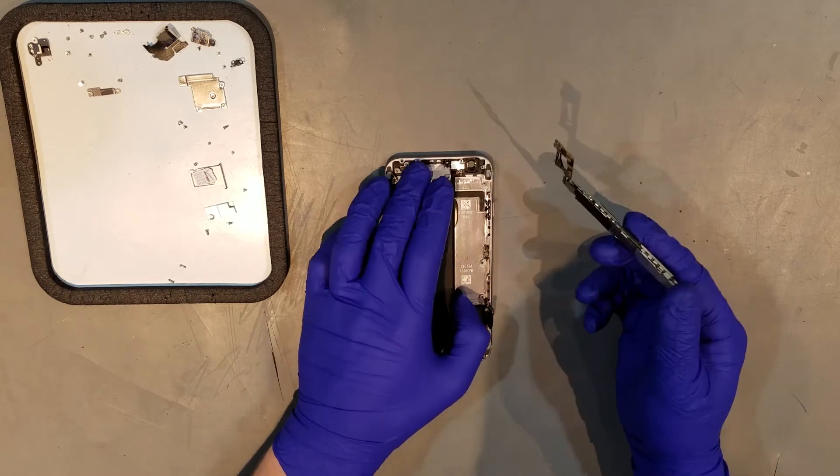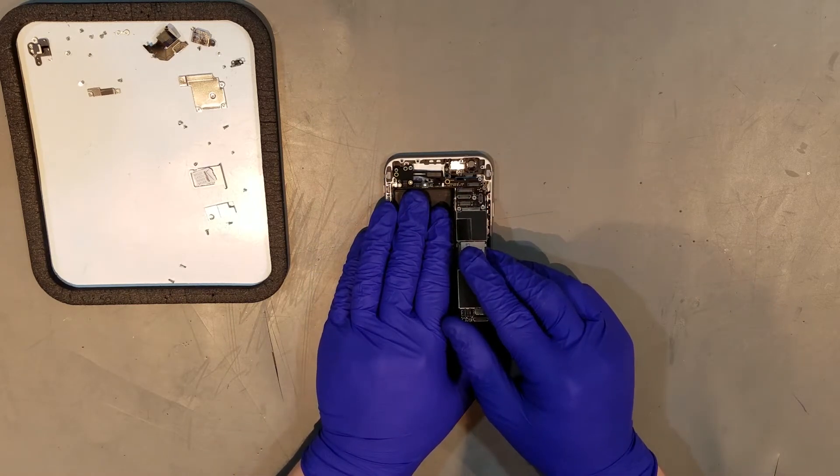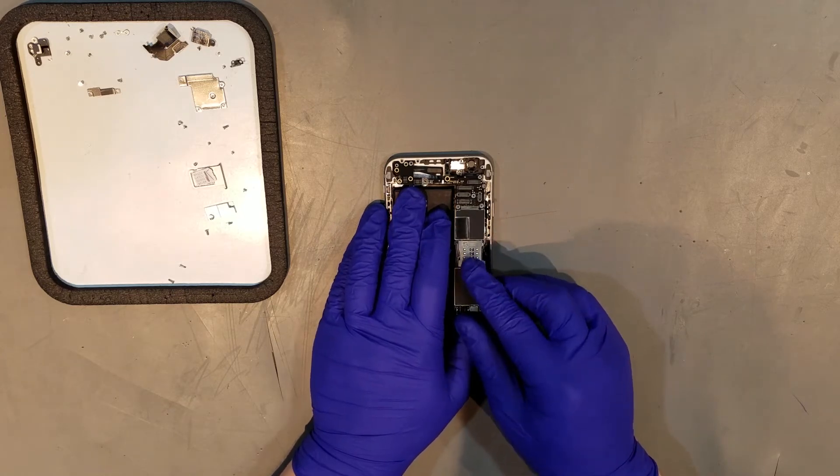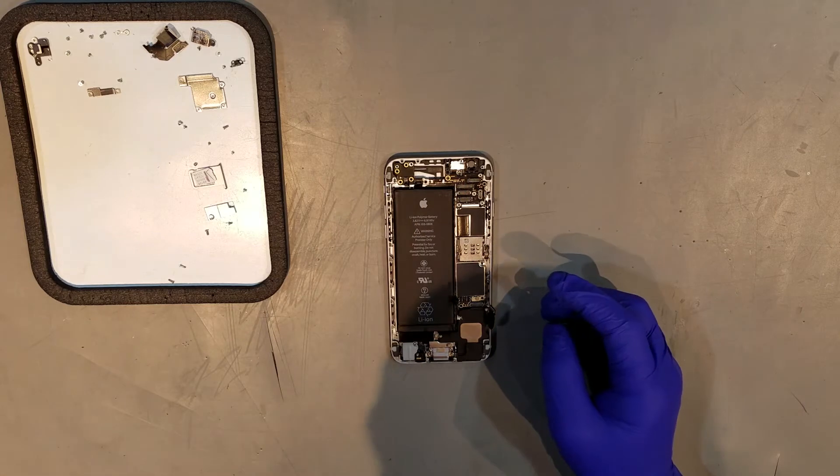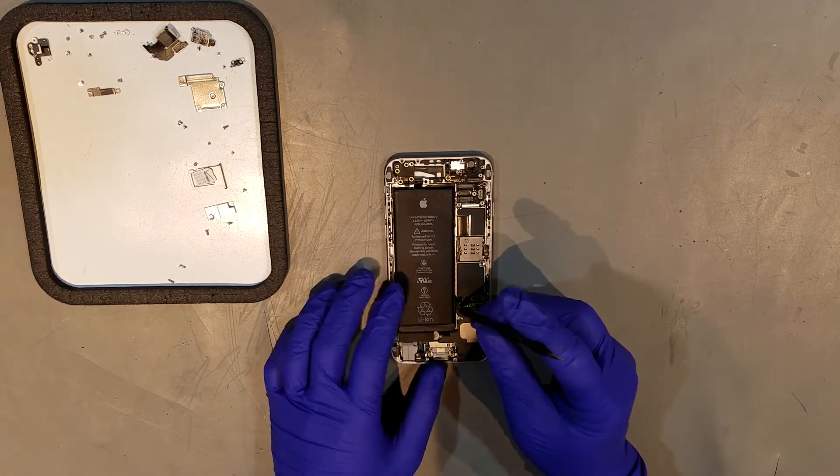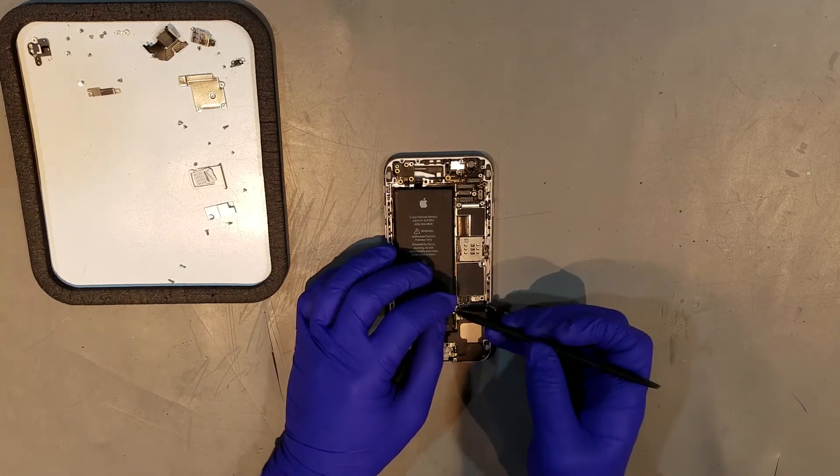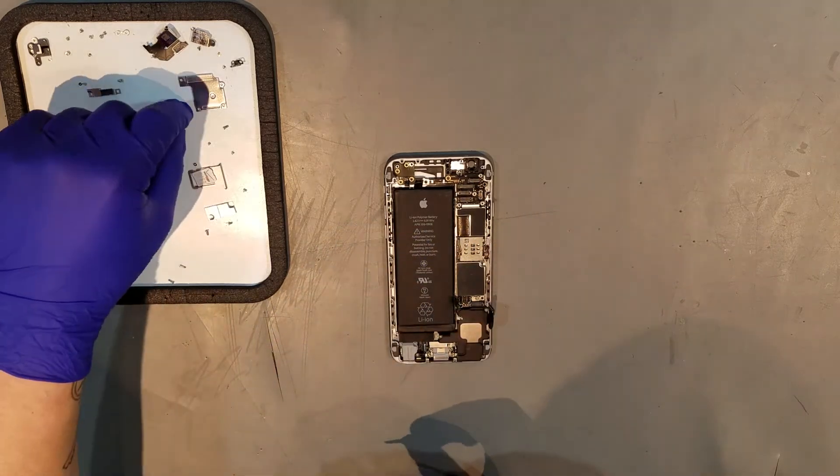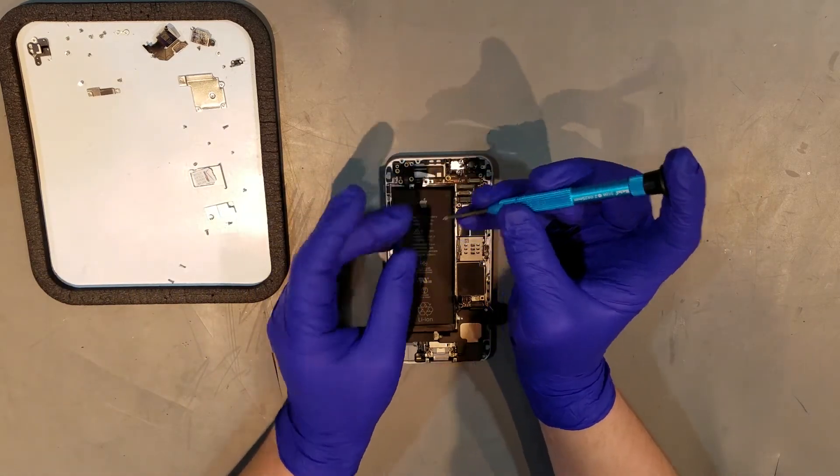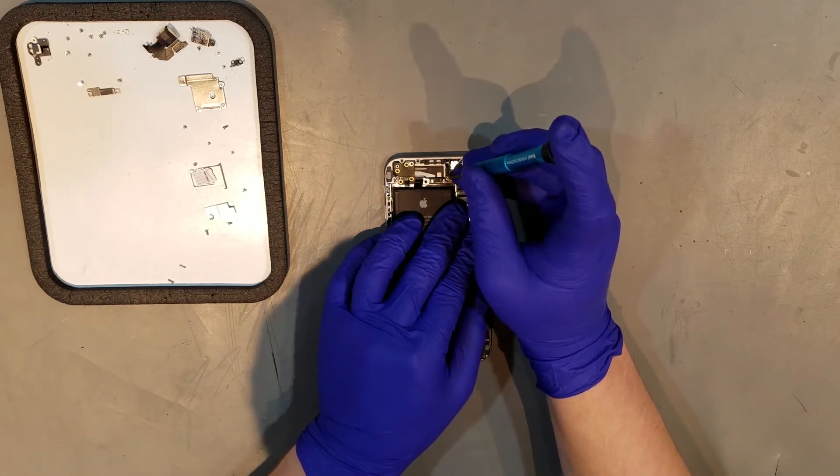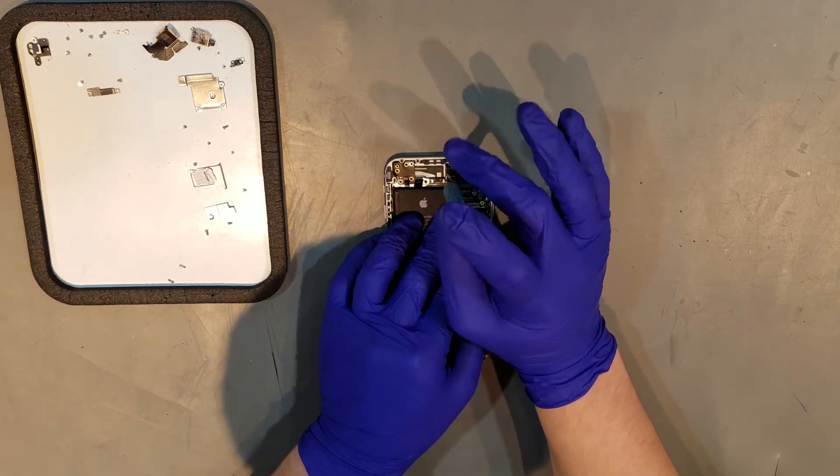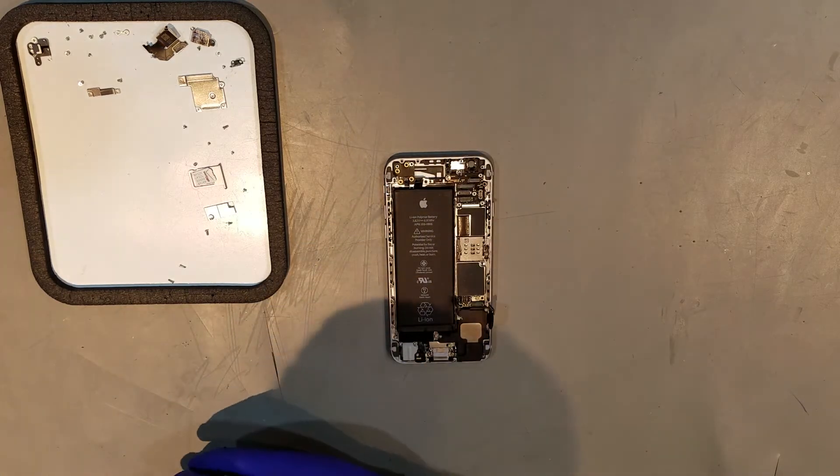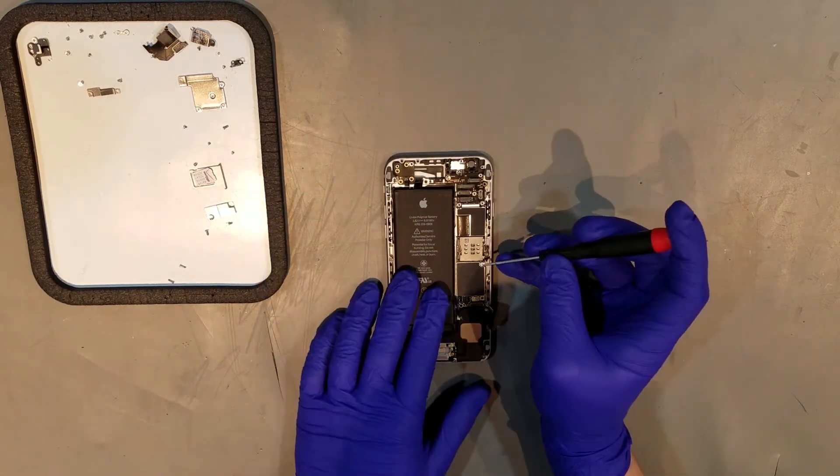When ready, the new logic board can be put in the housing by carefully moving the flex cables out of the way and sliding it in top side down first. You'll want to make sure that the board slides underneath the black L-shaped bracket to be seated properly. The first screw you can replace will be the standoff that we just took out. Then to make sure that the board is secure enough, replace the Phillips screw near the SIM card tray as well as the tray itself.